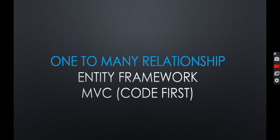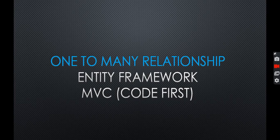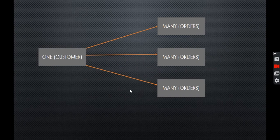Hello guys, welcome to my channel. Today we are going to learn how to configure a one-to-many relationship in Entity Framework using MVC code-first migration. We will create a project which uses code-first migration and then configure the one-to-many relationship. First, let's discuss what a one-to-many relationship is. For example, we have one customer and a customer has many orders, and each order belongs to a single customer.